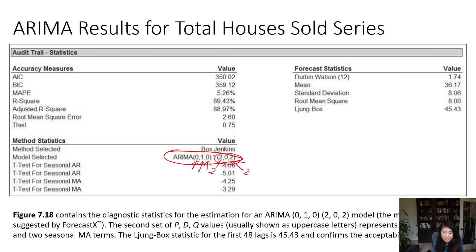The number of seasonal AR terms is two, and the number of seasonal MA terms is two as well. So for this dataset, we have both trend and seasonality. After ForecastX picks this result, it uses this as the best model — a black box — for forecasting this time series.